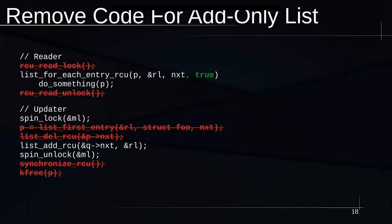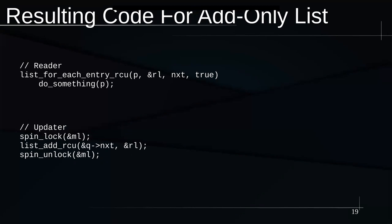To make it an add-only list, we remove code. We add a 'true' to keep lockdep happy on the list_for_each_entry_rcu — that doesn't affect operation, it just tells lockdep we understand we're not in an RCU read-side critical section. Because we're never removing anything, we don't have to mark rcu_read_lock or rcu_read_unlock, so those can go away. On the updater side, we're just adding, so we get rid of the list_first_entry, list_del_rcu, synchronized_rcu, and kfree — we're not removing anything.